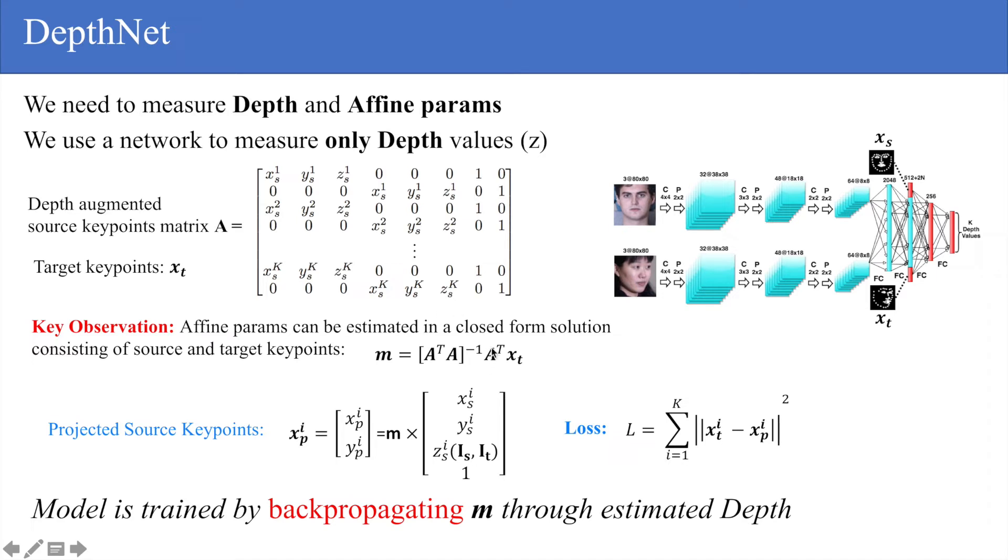The model is trained by backpropagating M through estimated depth. We're backpropagating through M, which goes through A, which goes through the estimated depths here. The really cool thing is that there is no depth supervision required.